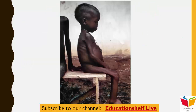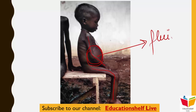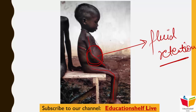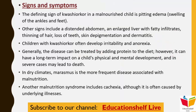Children who have Kwashiorkor show the classic sign of thin limbs — हाथ-पैर की हड्डियाँ बाहर आ रही हैं — but the belly is swollen. This happens due to fluid retention, or edema, which causes the gut to swell up.